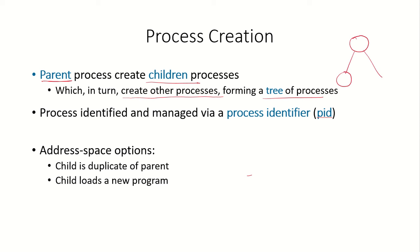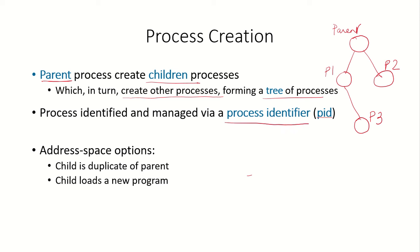Suppose the parent has created two children and each child can in turn create another process. So if this is the parent of process P1 and P2, then P1 will become the parent of process P3. In this way, a tree of processes can be created. Each process that is created is given a unique number by the operating system, known as the process identifier or the PID.